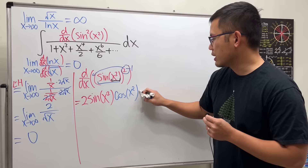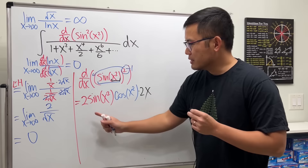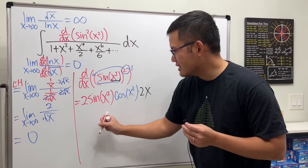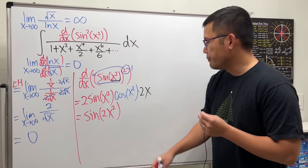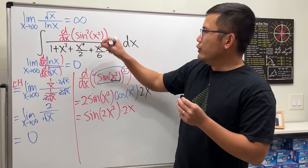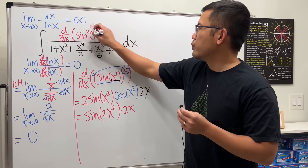We can actually make this better. When we have 2·sin·cos of the same input, we can use the double angle identity to condense it. So 2·sin(x²)·cos(x²) is just sin(2x²), thanks to the double angle identity. With the 2x out front, the final answer is 2x·sin(2x²).